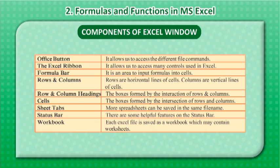Row and Column Headings are the boxes formed by the interaction of rows and columns. Cells are the boxes formed by the intersection of rows and columns. Sheet Tables: More spreadsheets can be saved in the same file. Status Bar: There are some helpful features on the status bar. Workbook: Each Excel file is saved as a workbook which may contain worksheets.